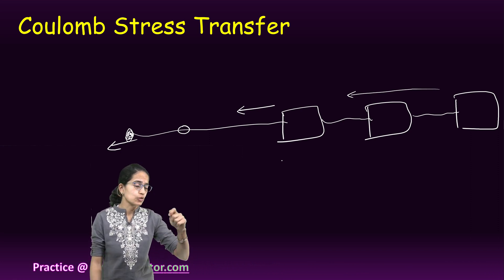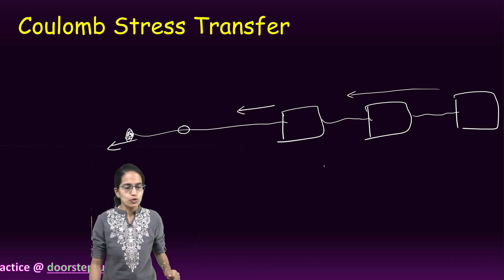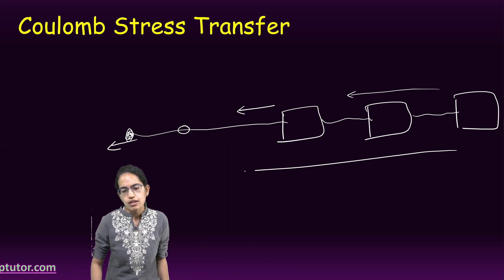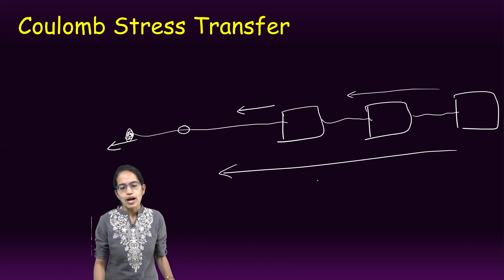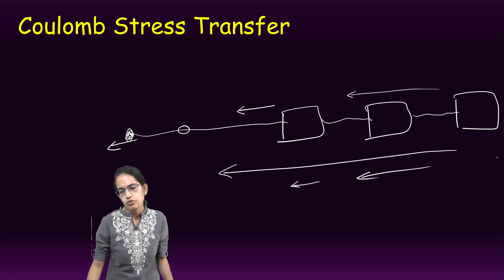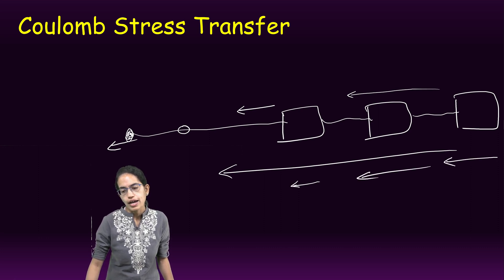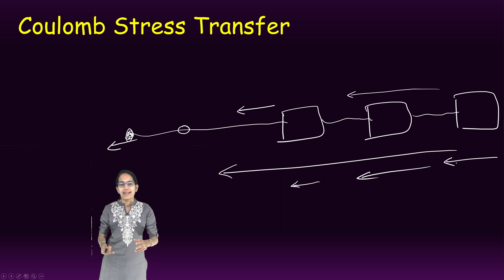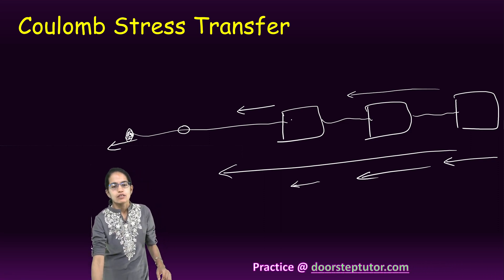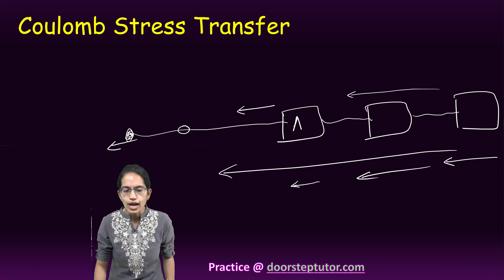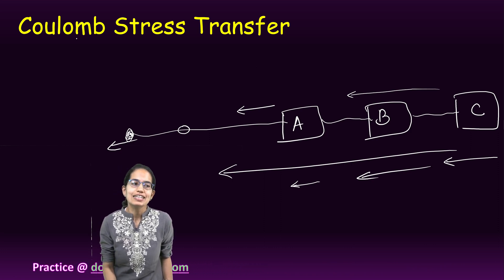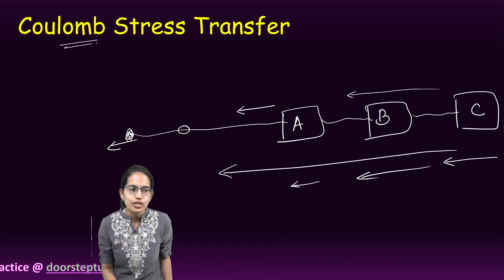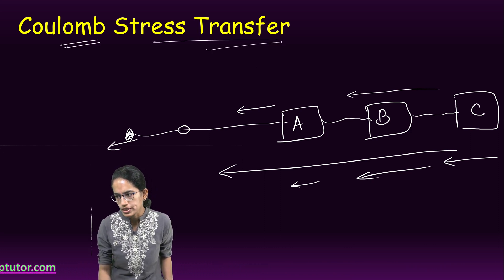In the second circumstance, I do it again — all three would move at an equal pace. In the third one, this movement would be a little small, and the other two movements would be higher. So the real idea is the stress from one gets transferred to another, and this is what is called Coulomb's stress transfer.